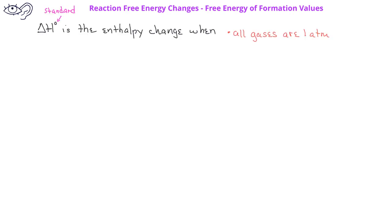In a previous general chemistry course, you should have learned that the standard enthalpy change, ΔH°, for a process is the enthalpy change when all gases present are at 1.0 atmospheres pressure, all liquids and solids are in their most stable form at one atmosphere.